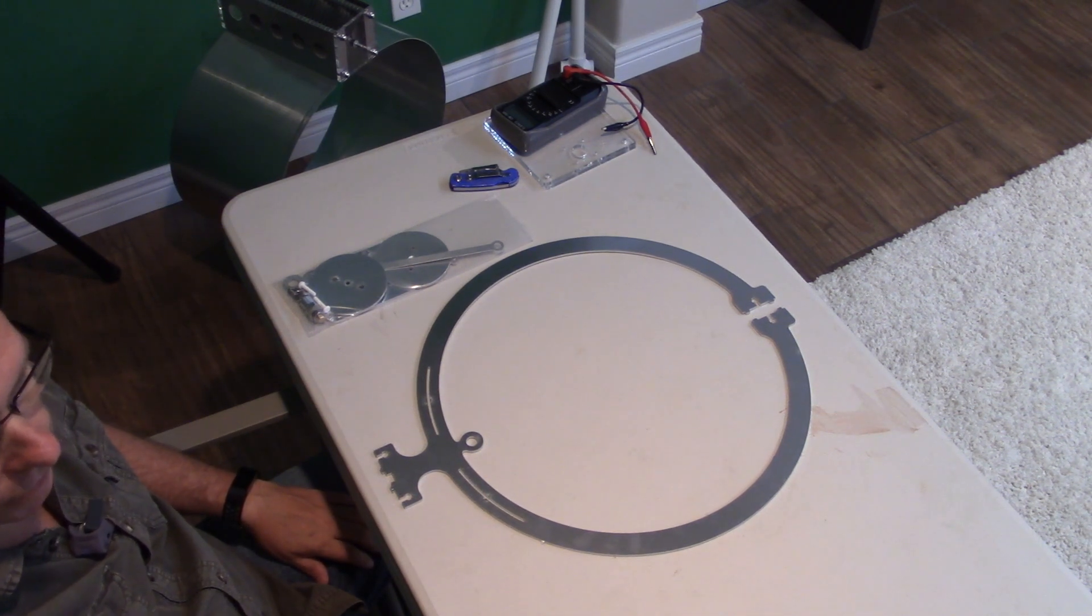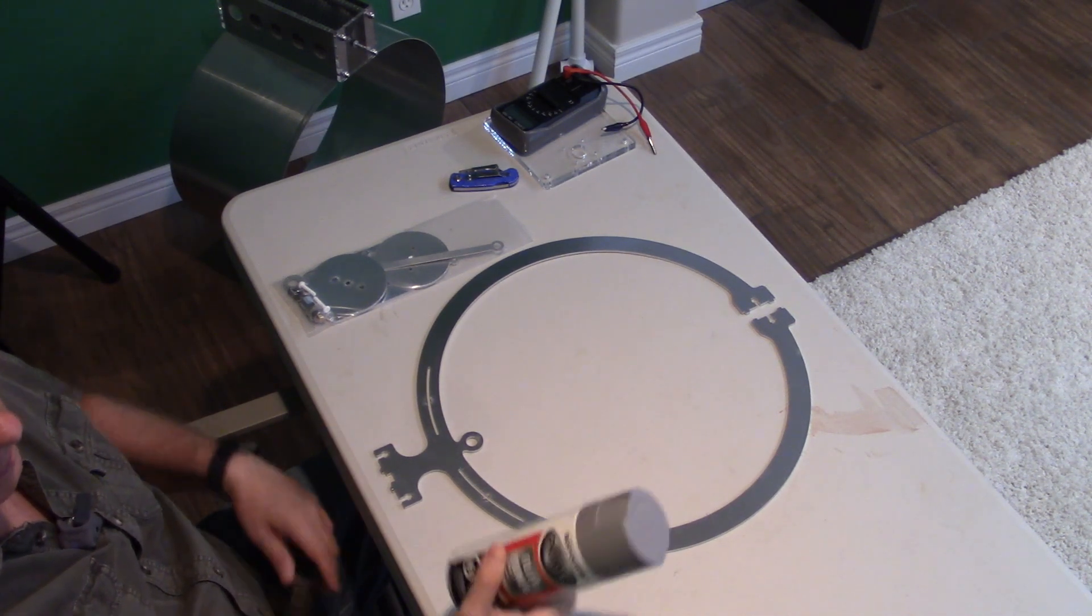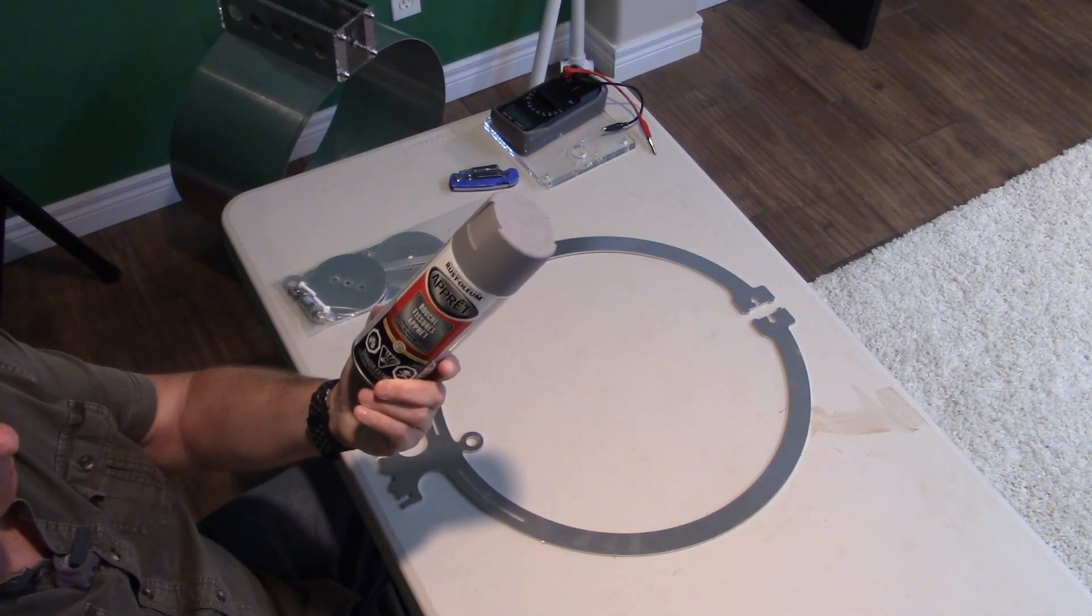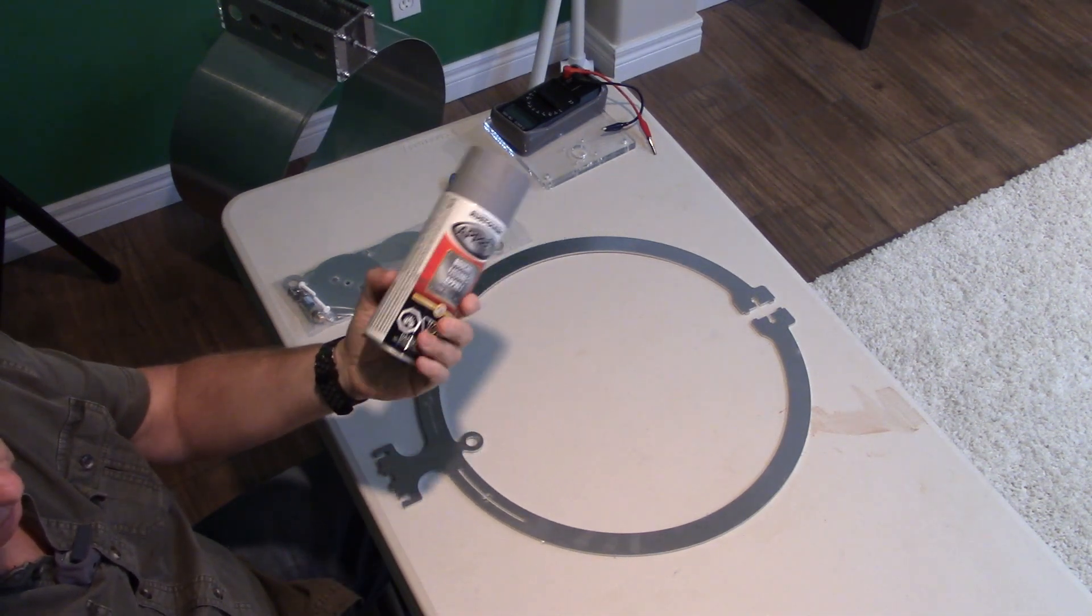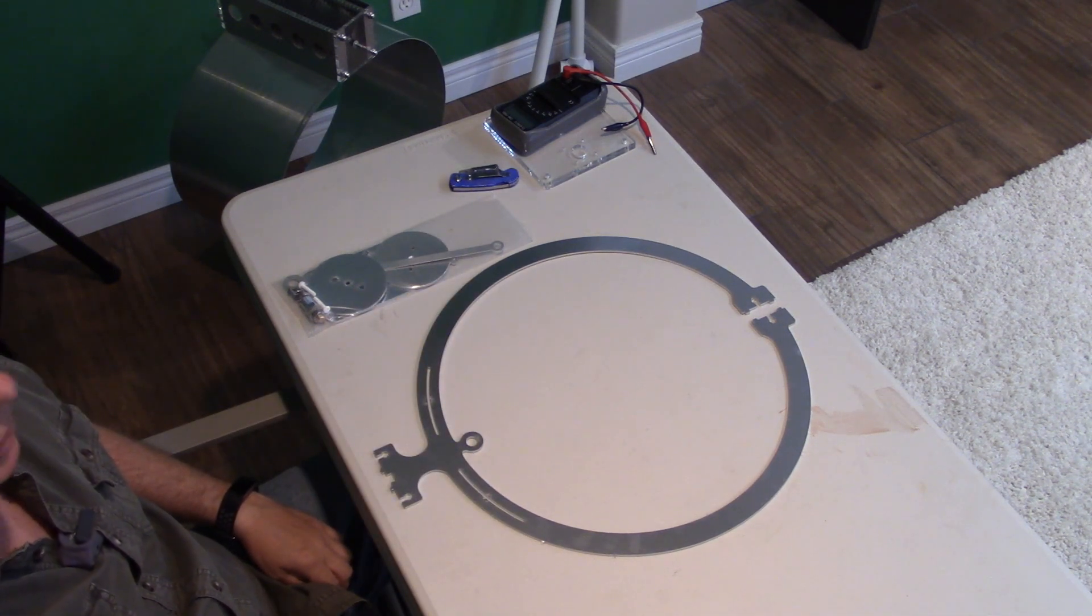One other thing, you'll need something to form the feeder loop on. I'm using an aerosol can of spray here, which is about the right diameter, but a cup, a glass, tube or something that will help you form a nice round circle.